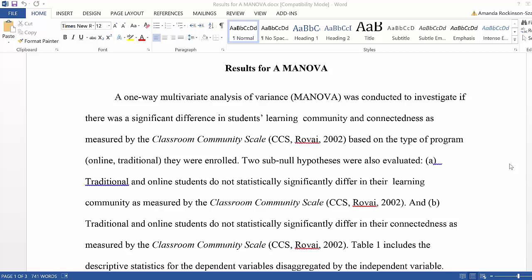So we're going to walk through this Word document. The first thing that we want to do is state the analysis that we did and what hypotheses were tested. So here you can see I've written that a one-way multivariate analysis of variance, a MANOVA,